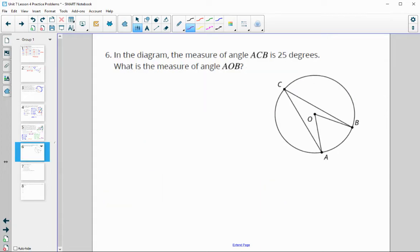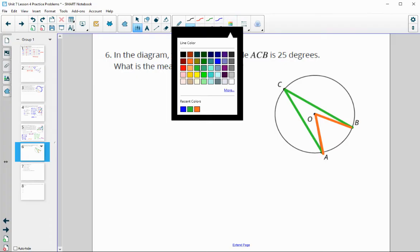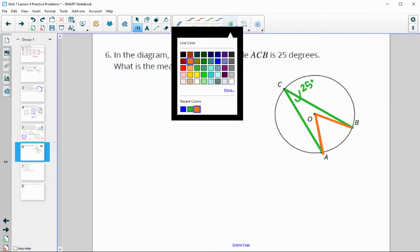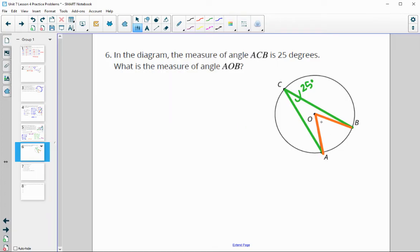Number six, in the diagram, the measure of angle ACB is 25 degrees. What is the measure of angle AOB? So we want this one. The green angle is an inscribed angle because it is touching the edge of the circle, and it's made by two cords. So this one is 25 degrees, they told us. And then the orange angle is a central angle, which is equal to this arc.